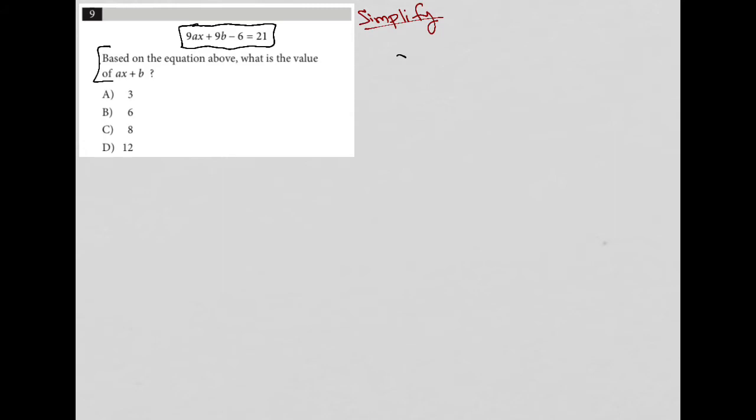My first step is to write down this equation: 9AX + 9B - 6 = 21. The question asks, based on the equation above, what is the value of AX + B?